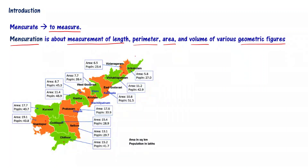Look at this — this is the Andhra Pradesh state map. In this figure we have given the areas of different districts. If you have to measure the area of a given district, village or state, you should be aware of the concepts related to mensuration. For example, if you are asked what is the length of the coastline Andhra Pradesh has, or what is the length of the border Andhra shares with Karnataka state, you should be able to answer. You have to learn about mensuration.